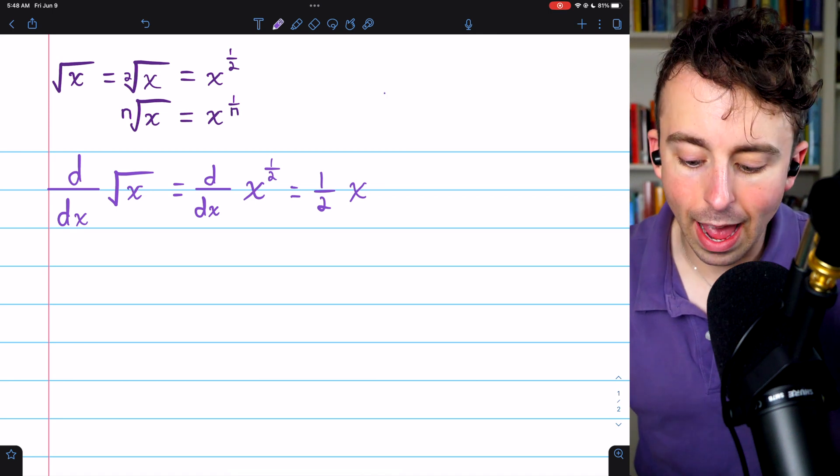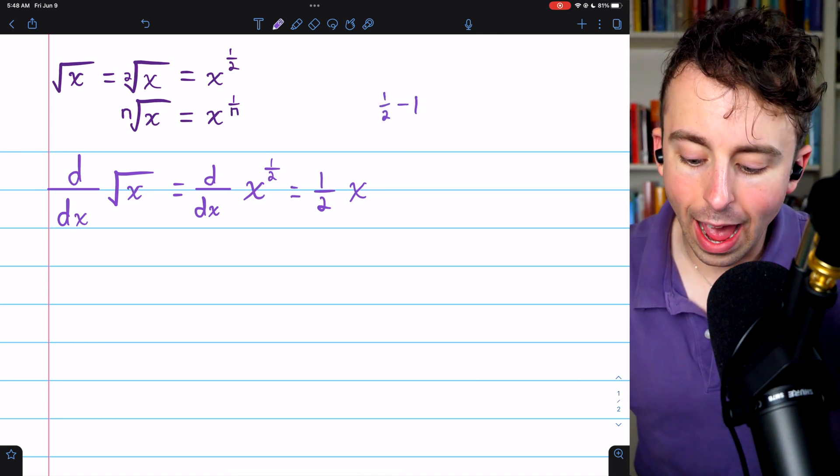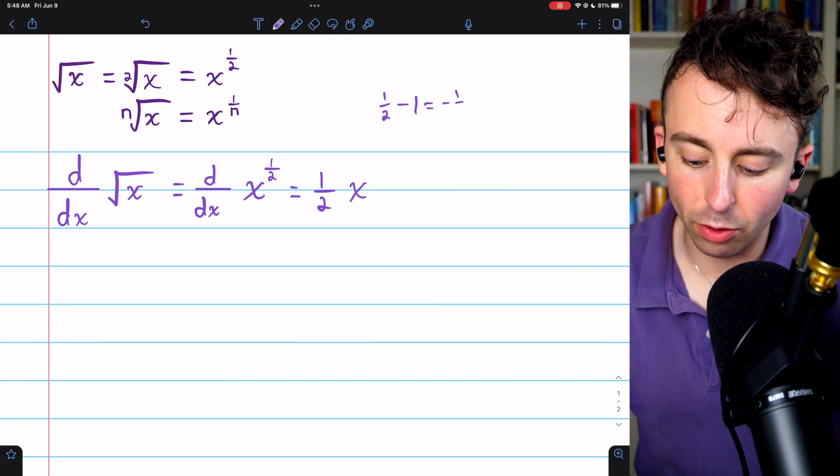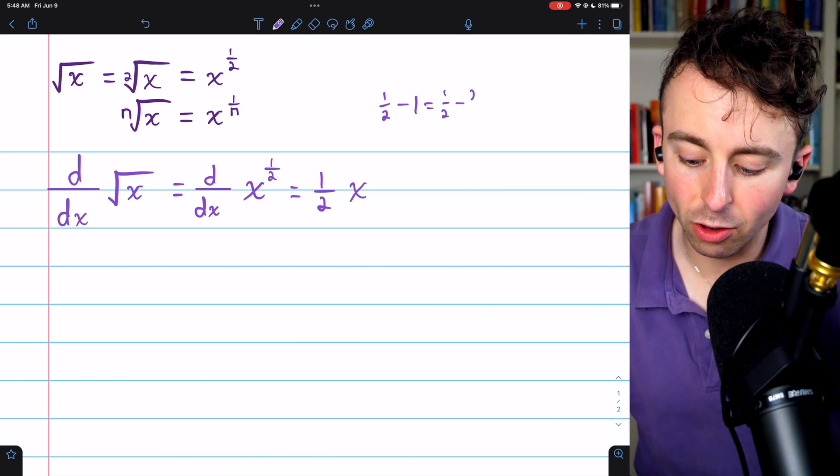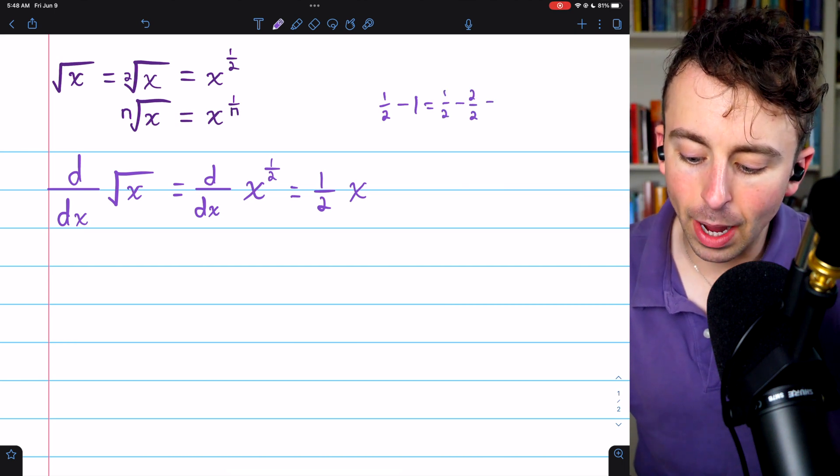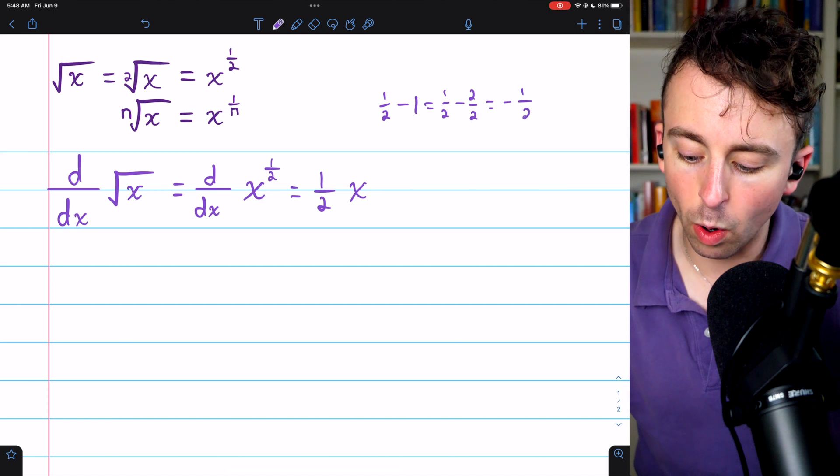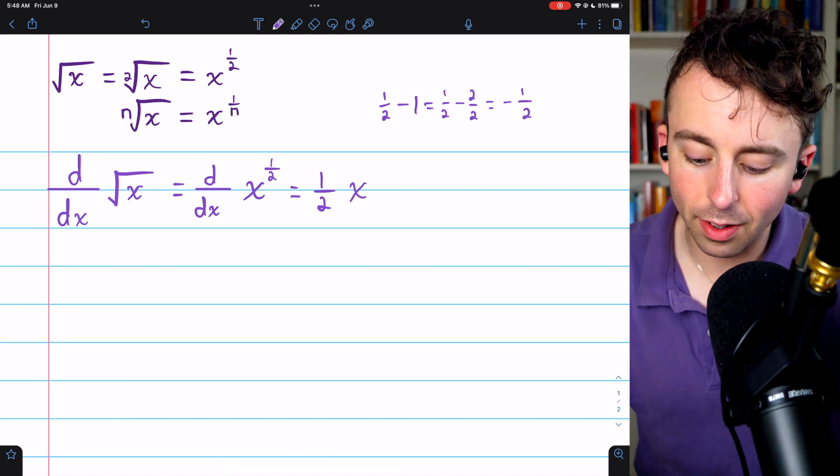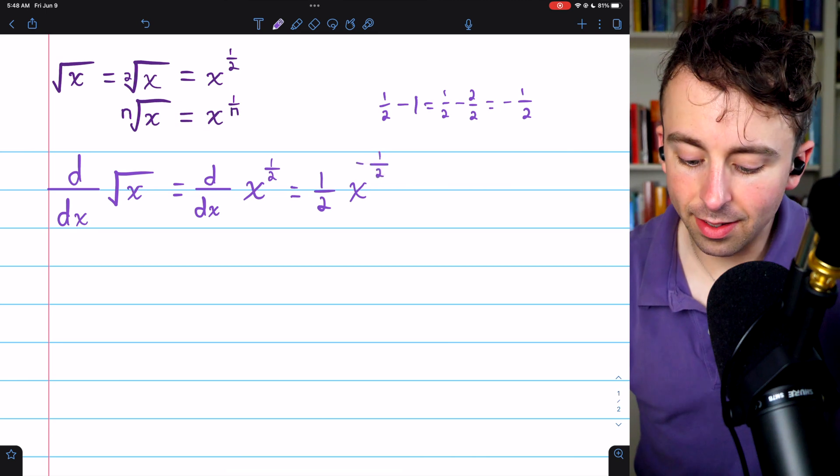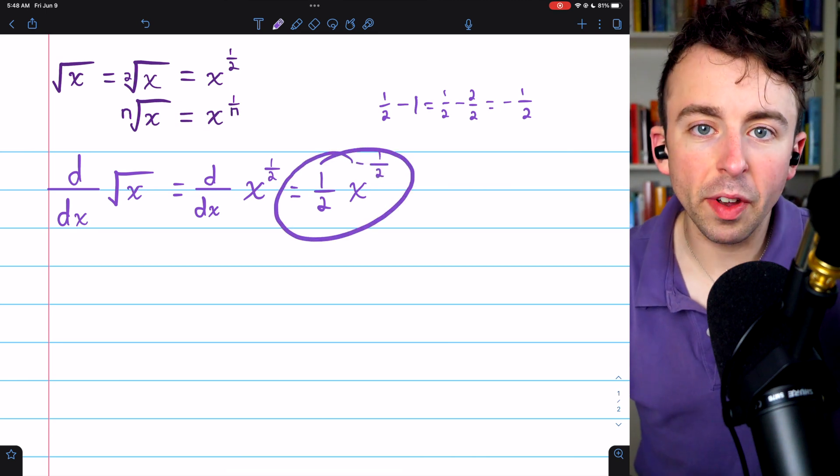So now the power is one-half minus 1. One-half minus 1, of course, is just one-half minus two halves, and one-half minus two halves is negative one-half. So it's one-half times x to the negative half. That is the derivative of the square root of x.